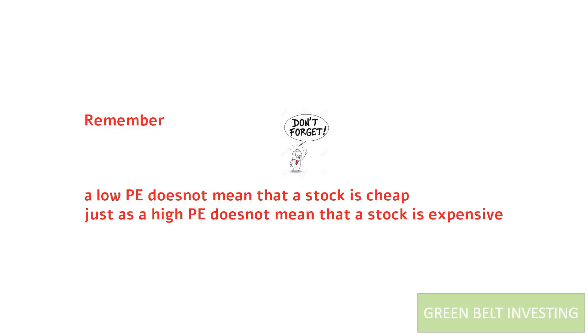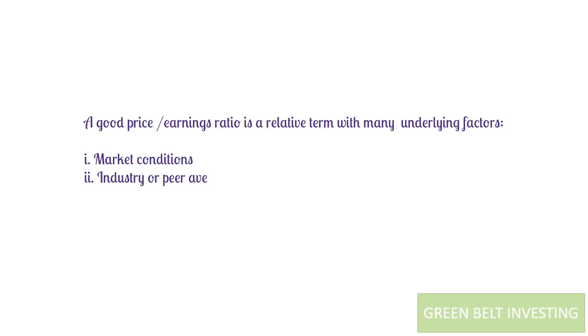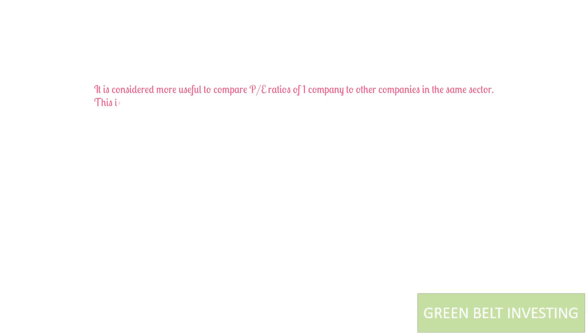A good price to earnings ratio is a relative term with many underlying factors — for example, the market conditions, industry or peer average, nature of industry, historical P/E trends, etc. It is usually considered more useful to compare the P/E ratios of one company to other companies in the same industry or sector, since each industry may have different growth prospects and business models.